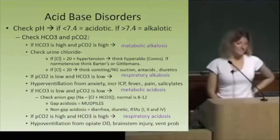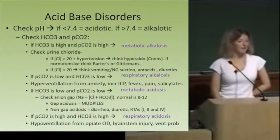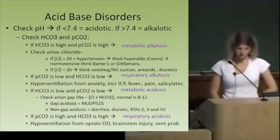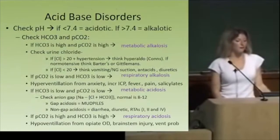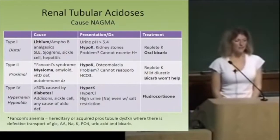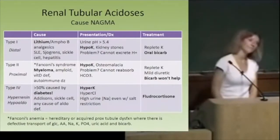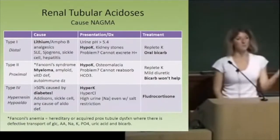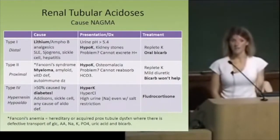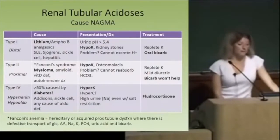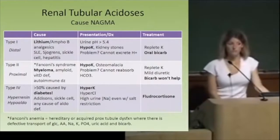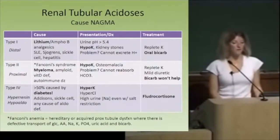RTAs are a cause of non-anion gap metabolic acidosis. Type 1 is distal — the main cause seen in clinical vignettes is lithium. On presentation, the urine is alkalotic and blood potassium is low. We treat Type 1 RTA with oral bicarbonate, because the problem is with proton excretion. Type 2 is proximal — the most common cause in vignettes is multiple myeloma. It is also hypokalemic on presentation, but the problem is inability to reabsorb bicarb, so giving bicarbonate doesn't help. Here we give a mild diuretic and replete potassium.